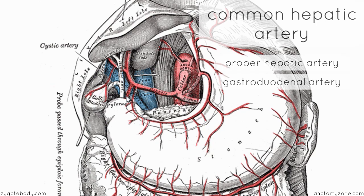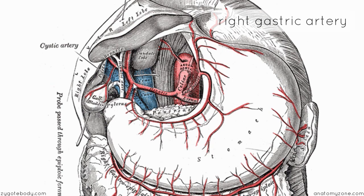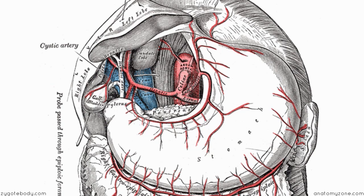We've seen this branch before — it's the right gastroepiploic artery. The gastroduodenal artery is so called because it gives off a branch to the stomach (the 'gastro' part) and a branch which supplies the duodenum (the 'duodenal' part). The right gastric artery anastomoses with the left gastric artery. The origin of the right gastric artery is variable — it can come off the common hepatic artery or the proper hepatic artery — but it runs along the lesser curvature of the stomach and anastomoses with the left gastric artery.